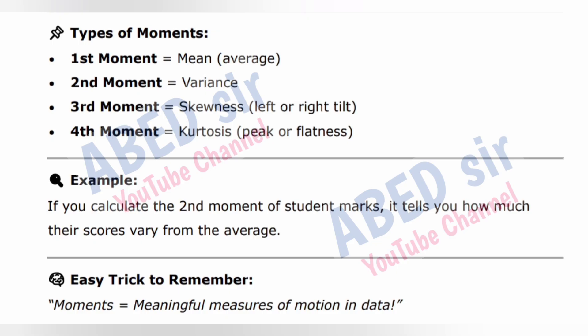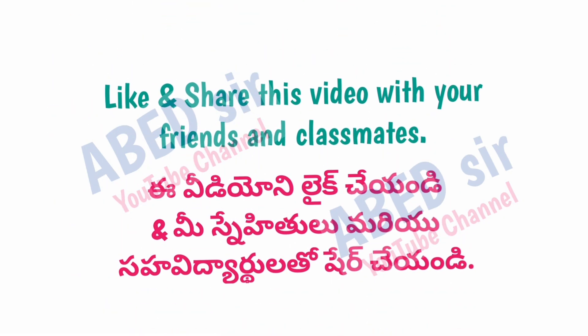Types of moments: 1. First moment = mean (average). 2. Second moment = variance. 3. Third moment = skewness (left or right tilt). 4. Fourth moment = kurtosis (peak or flatness). Example: if you calculate the second moment of student marks, it tells you how much their scores vary from the average. Easy trick: Moments = meaningful measures of motion in data.